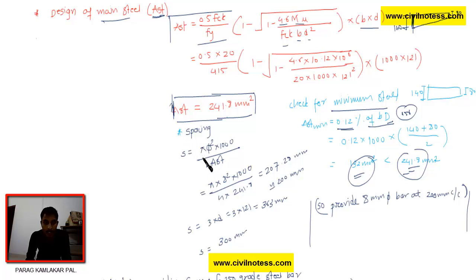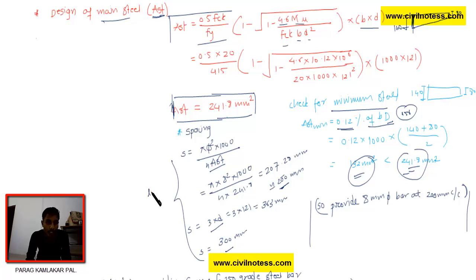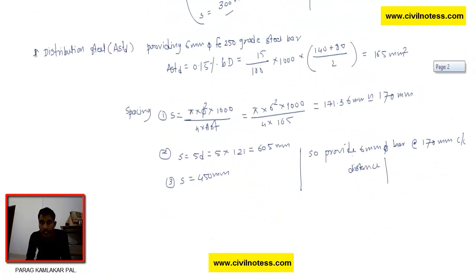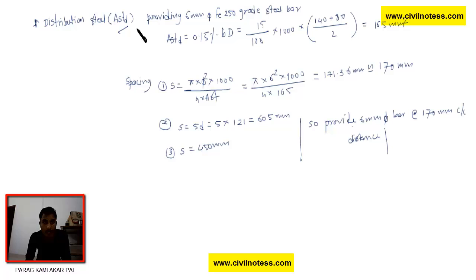The spacing is calculated as: S = (π/4 × diameter² × 1000) / AST. After rounding up, the spacing for the main bar is governed by 3d and 300 mm — take the least value. We get 200 mm. So we provide 8 mm diameter bars at 200 mm center to center for the main steel.